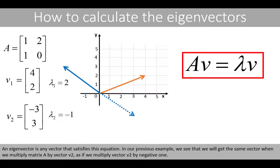An eigenvector is any vector that satisfies this equation. In our previous example, we see that we will get the same vector when we multiply matrix A by vector V2, as if we multiply vector V2 by negative 1.